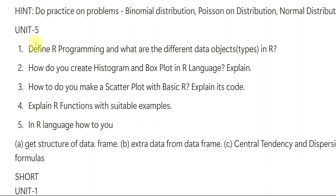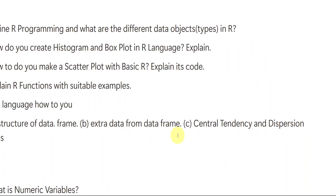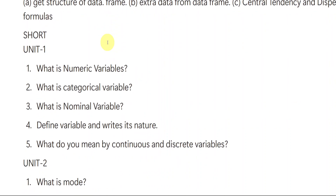From unit number five, the last unit: Define R programming and what are the different data objects or types in R? How do you create a histogram and box plot in R language? How do you make a scatter plot with basic R — explain its code? Explain R functions with suitable examples. How to get the structure of a data frame and extract data from a data frame? Also cover central tendency and dispersion formulas. Be perfect with these five questions from unit number five.